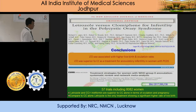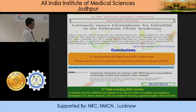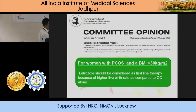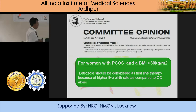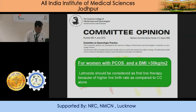Letrozole versus clomiphene citrate plus metformin — letrozole is superior. So if you are giving clomiphene citrate and add metformin, this is better, but along with letrozole, letrozole is the only treatment showing a significantly higher rate of live birth. This is the American College guideline: letrozole should be considered as a first-line therapy because of the higher live birth rate, especially in patients with BMI more than 30 kg/m², comparable to or better than CC alone.